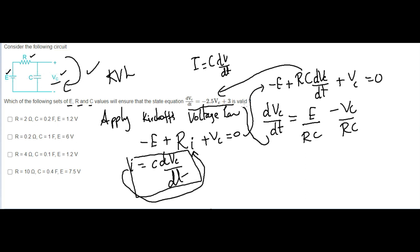Now compare this derived equation with the given state equation. We have dVc/dt on the left. On the right we have a term with one-over-RC multiplied by E, and another term with Vc multiplied by one-over-RC. So comparing coefficients, both terms involve the factor 1/RC.